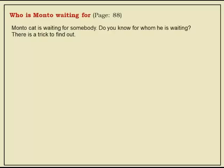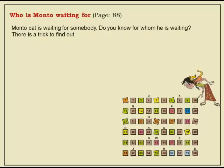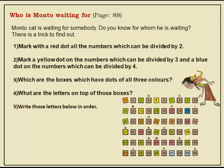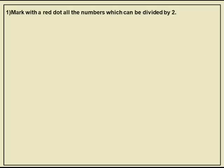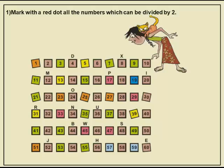Now, who is Monto the cat waiting for? There is a trick to find out. Mark with a red dot all numbers which can be divided by 2 — that is, the two-times table: 2, 4, 6, 8, 10, 12, 14, 16, and so on. Mark with a yellow dot all numbers which can be divided by 3 — that is, the three-times table: 3, 6, 9, 12, 15, 18, 21, 24, and so on. If you are unsure whether a number is divisible, do the division and check that the remainder is 0.